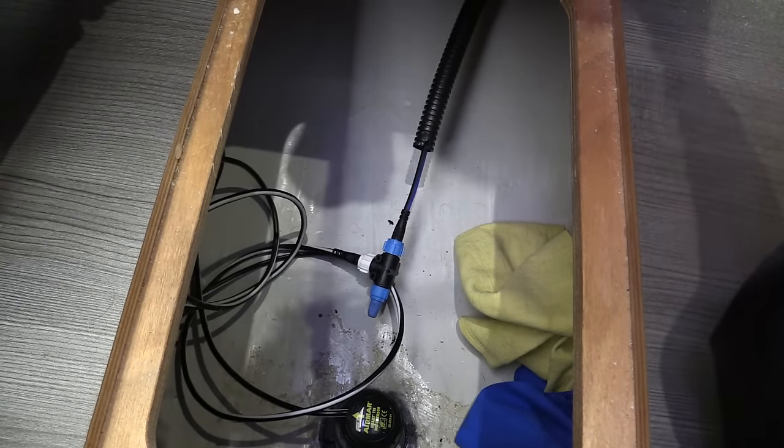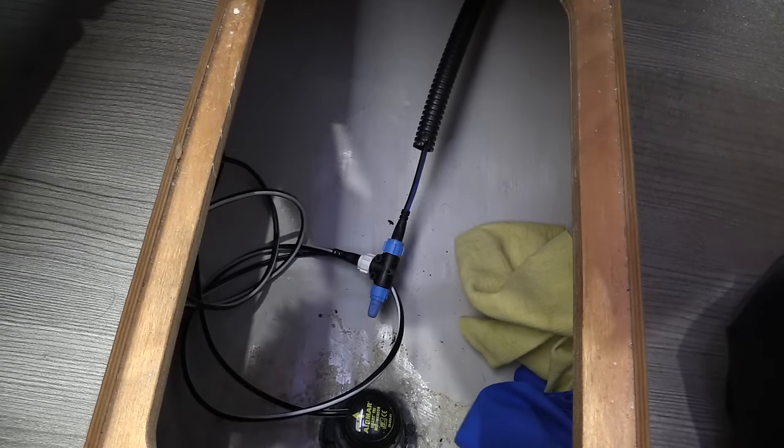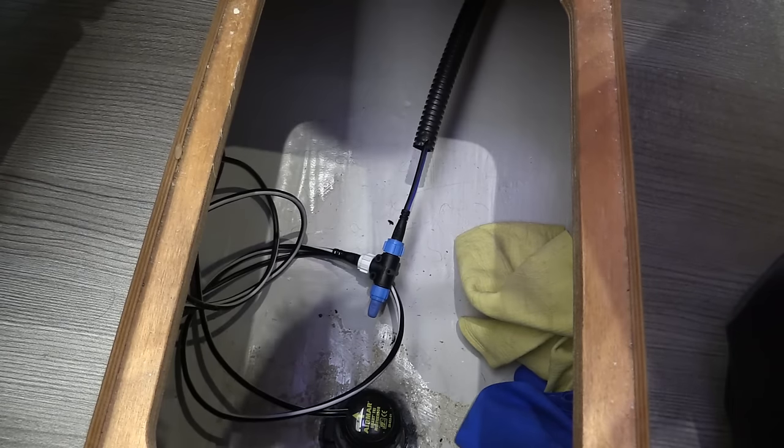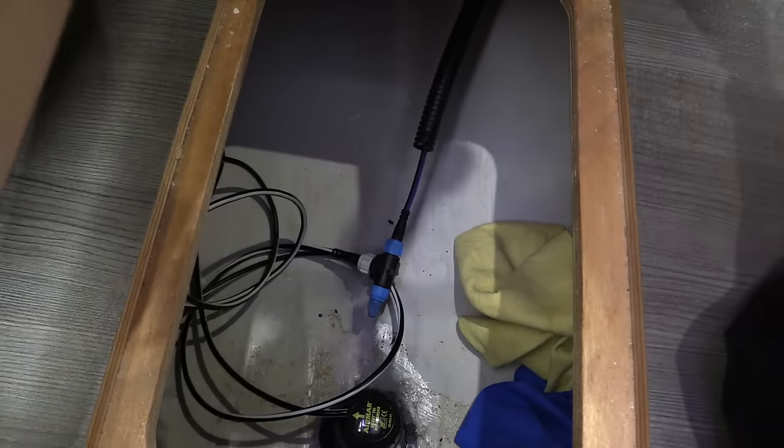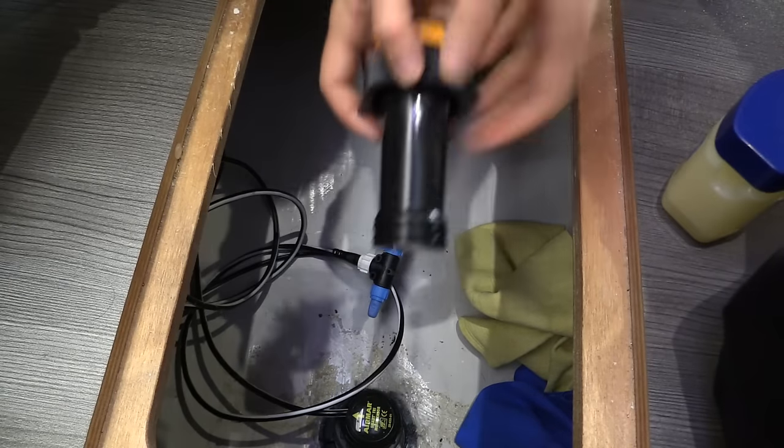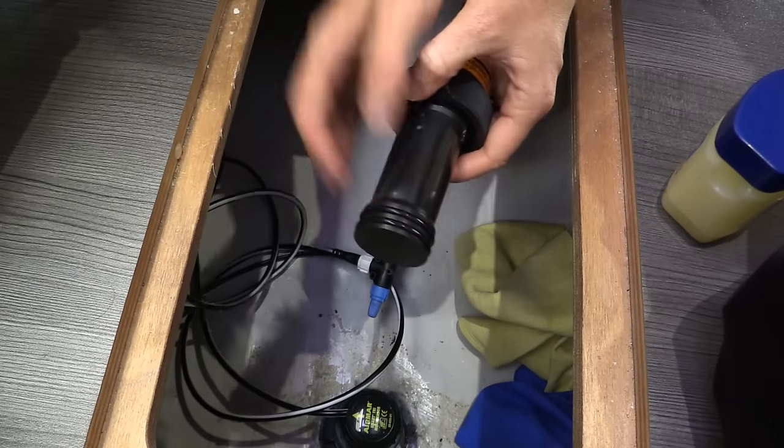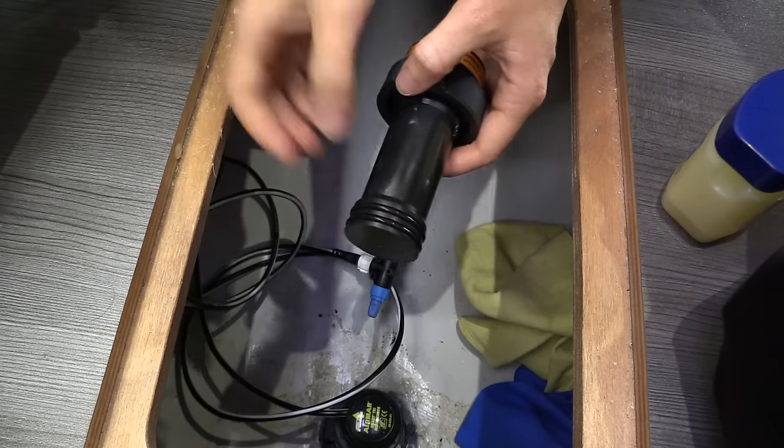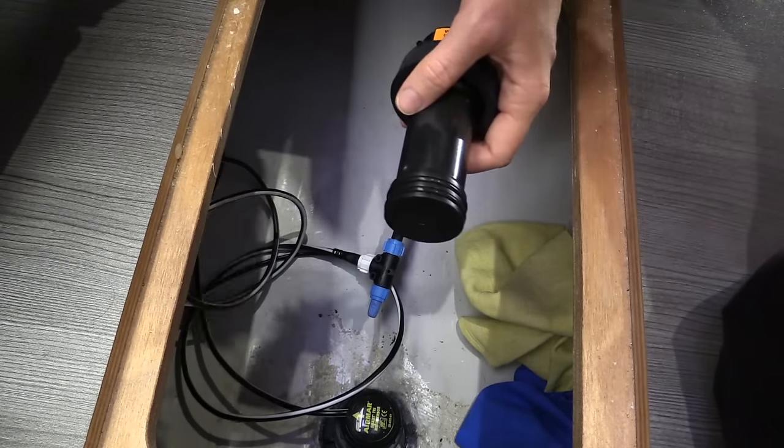The instructions say to lubricate the O-rings in your blanking plug first. So here are the two O-rings. This is a brand new blanking plug. We actually had to order one because when our transducer got installed, we don't know what happened to the blanking plug.